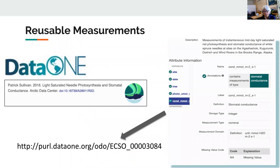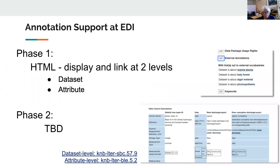If you go to Data One and run a search, you'll see at the dataset level it also gives you additional information about that measurement in the view of a dataset. At EDI, we are still planning how to handle this new feature. So far we've adapted our EML style sheets, which display HTML from the data package metadata, to show the contents of an annotation and link out to the full description. We're planning to use a pop-up widget in the future. We're using the display at two levels: the dataset level and the attribute level.